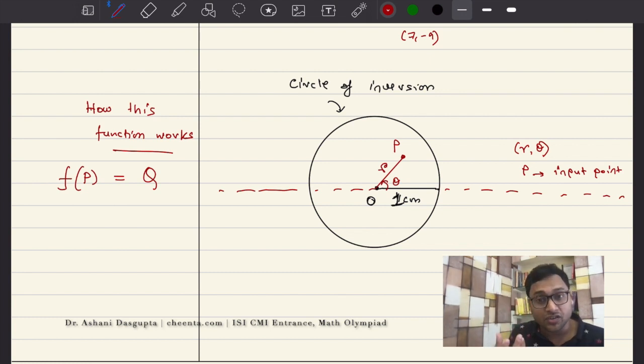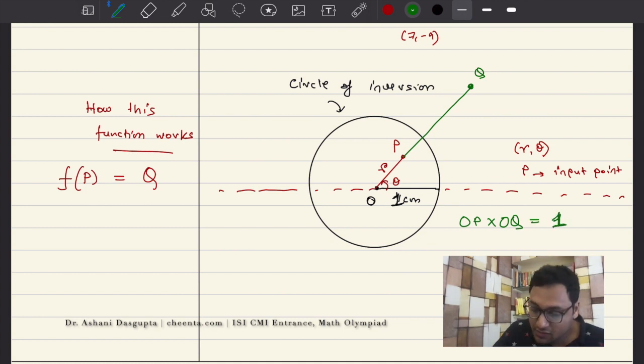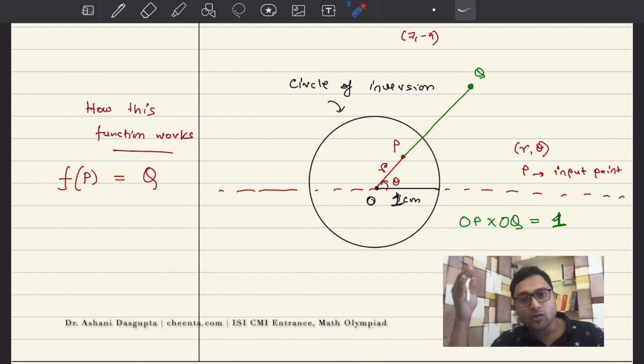What I want is, if I take P as the input point, I would want to tell you what is the output point if the function is inversion. And it's really simple. What you do is you take another point here, somewhere here maybe, on the same line, on the same line OP. So Q is on the line OP. And the length of OP times the length of OQ should be 1. Hence, we call it inversion. The lengths are reciprocal.